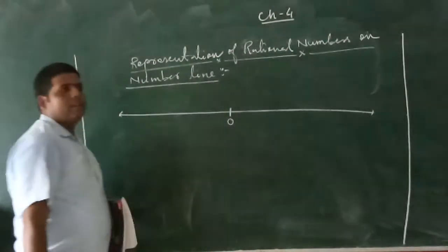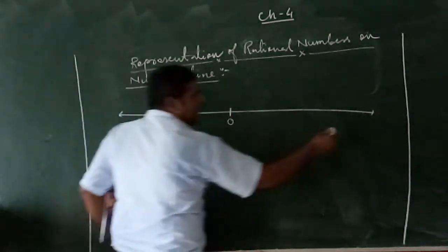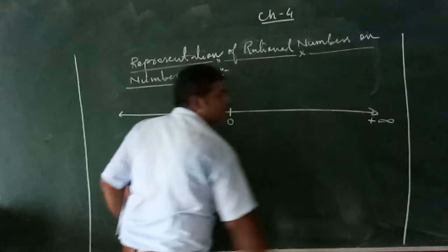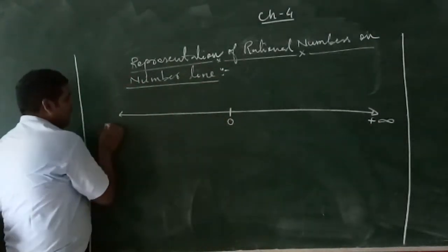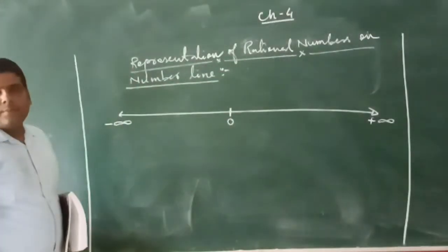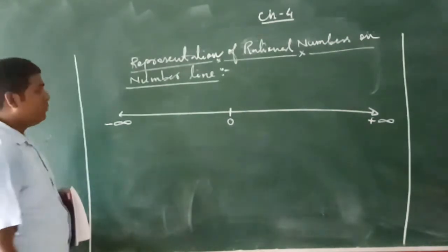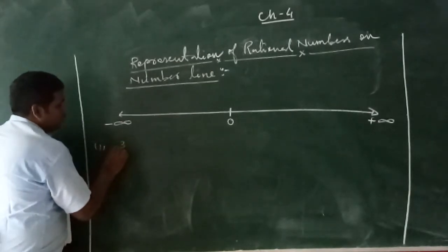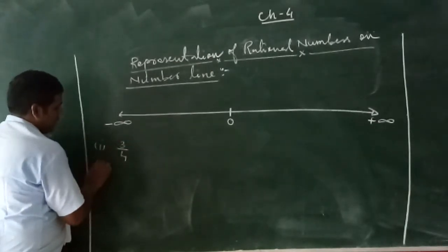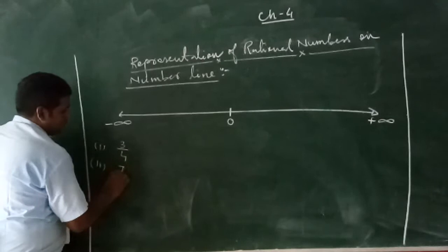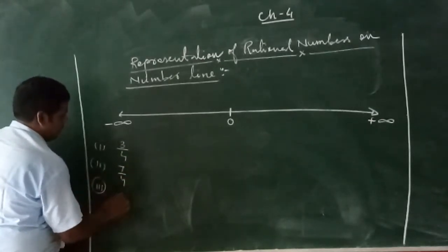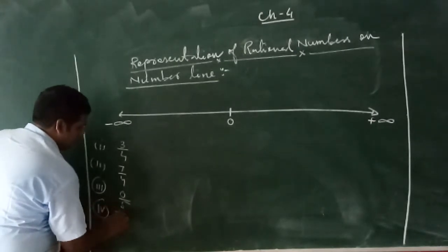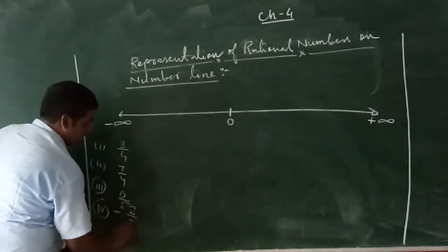In the video, this is zero. On the right hand side is plus infinity, and on the left hand side is minus infinity. We will take three rational numbers to represent: three by four, seven by four, and minus two by seven.